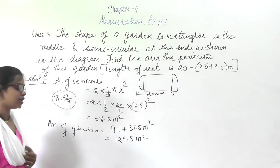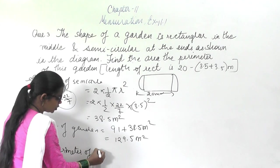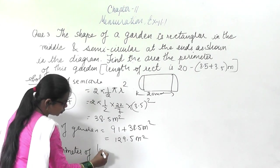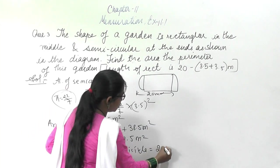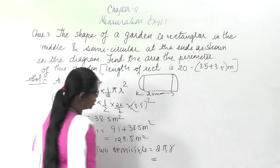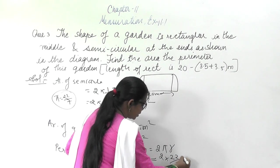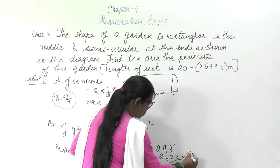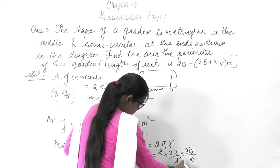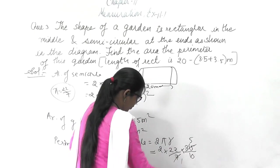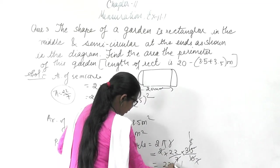First we will find the perimeter of the 2 semicircles. Perimeter of 2 semicircles equals 2 into pi into r. Substituting: 2 into (22/7) into 3.5. On solving, you will get 22 meters. So the perimeter of the 2 semicircles is 22 meters.